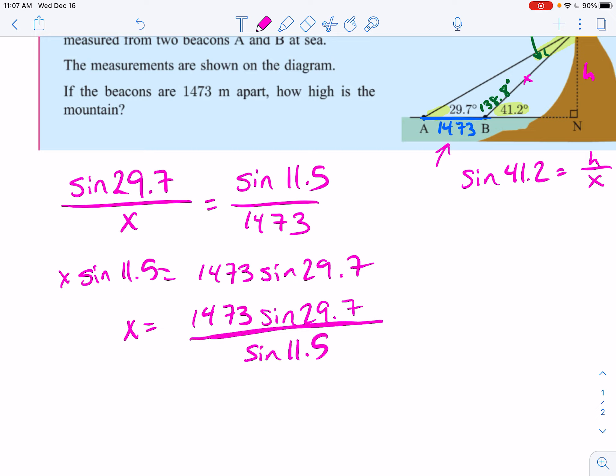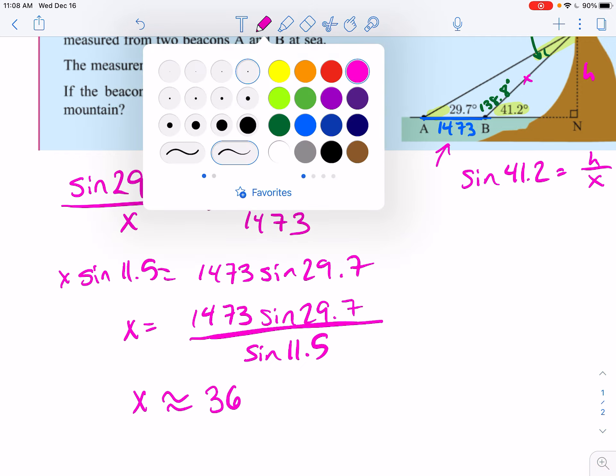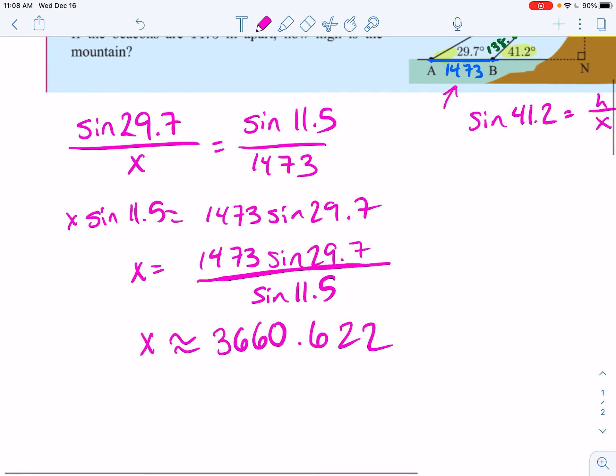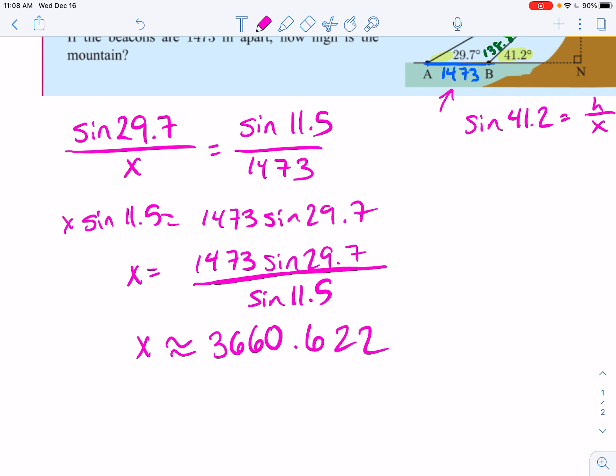But, to be honest with you, they probably rounded those angles when they were actually measuring it. Well, this is just a made-up problem, but that's fine. 1473 times sine of 29.7. Yes, I'm in degrees. I just looked up at the top of my calculator to verify. Divided by sine of 11.5 is equal to, I found that X is approximately 3660.622. IB typically likes 3 sig figs, and pre-calc typically likes 3 decimal places, but there we go.